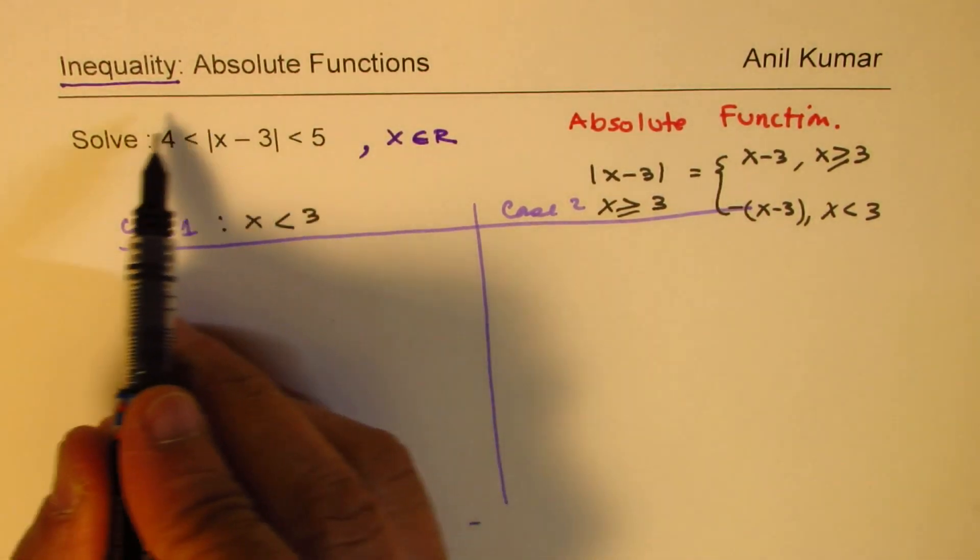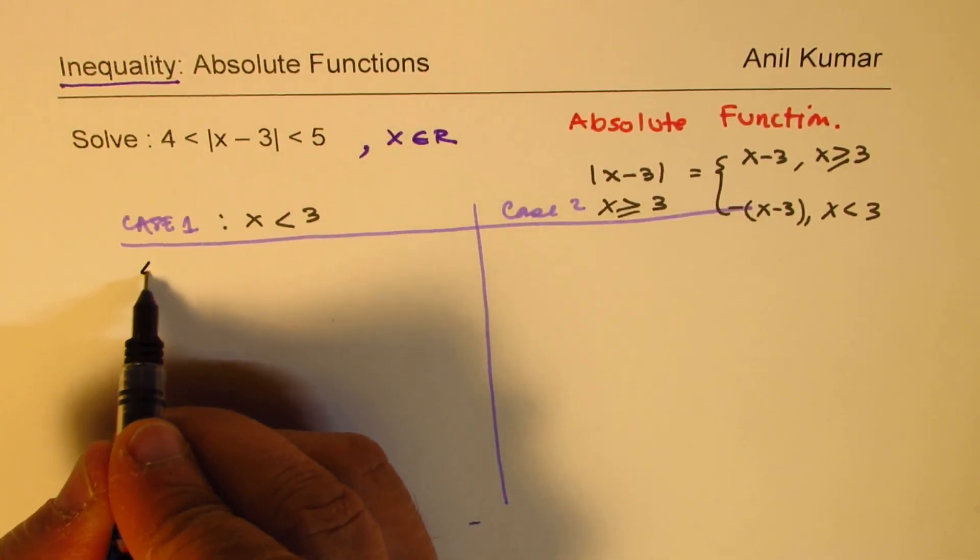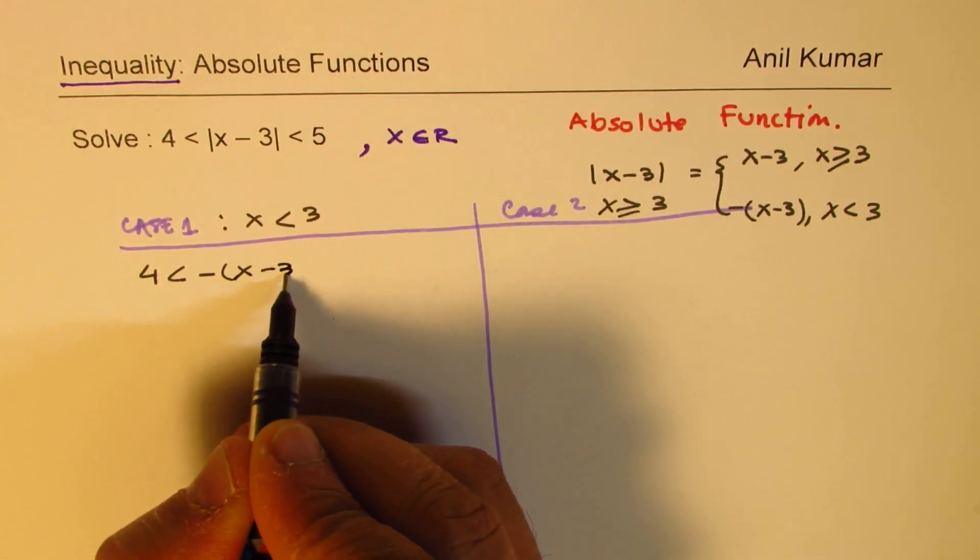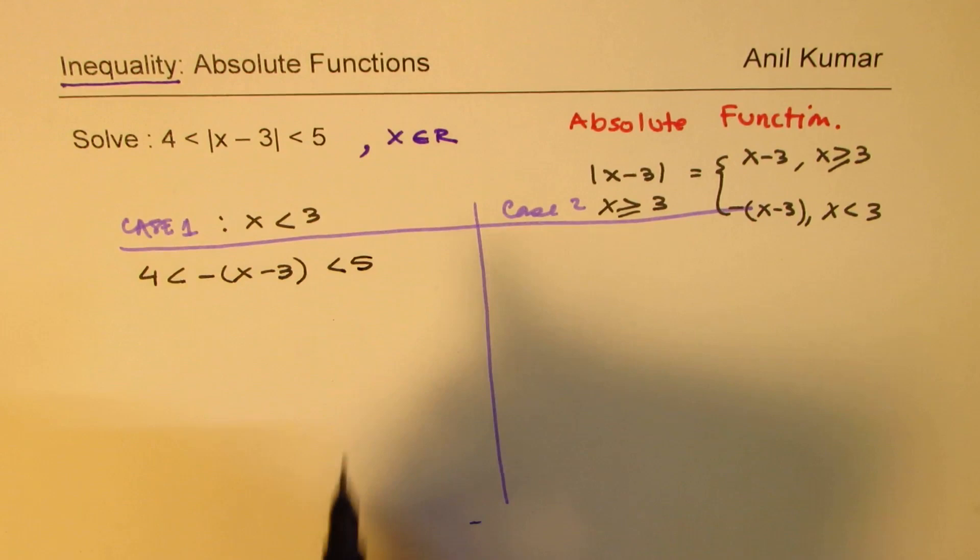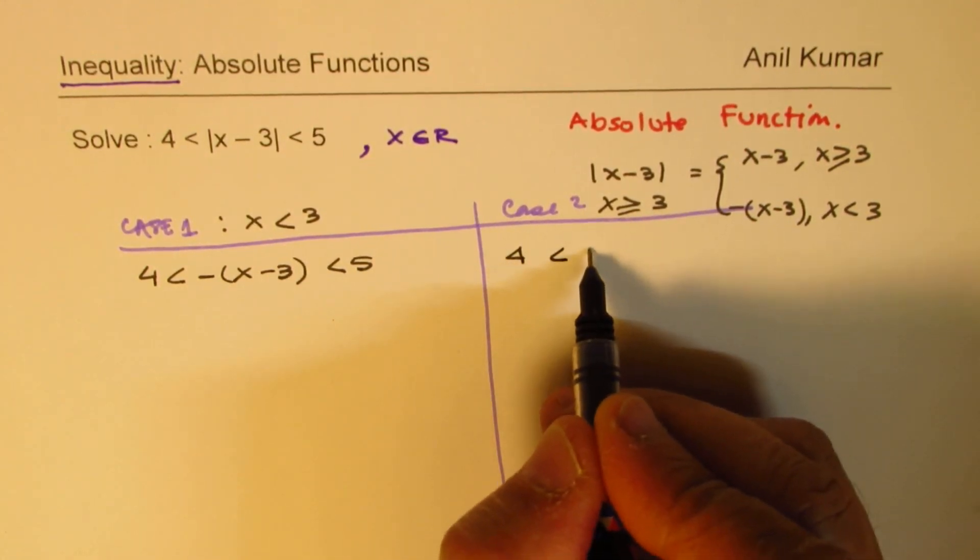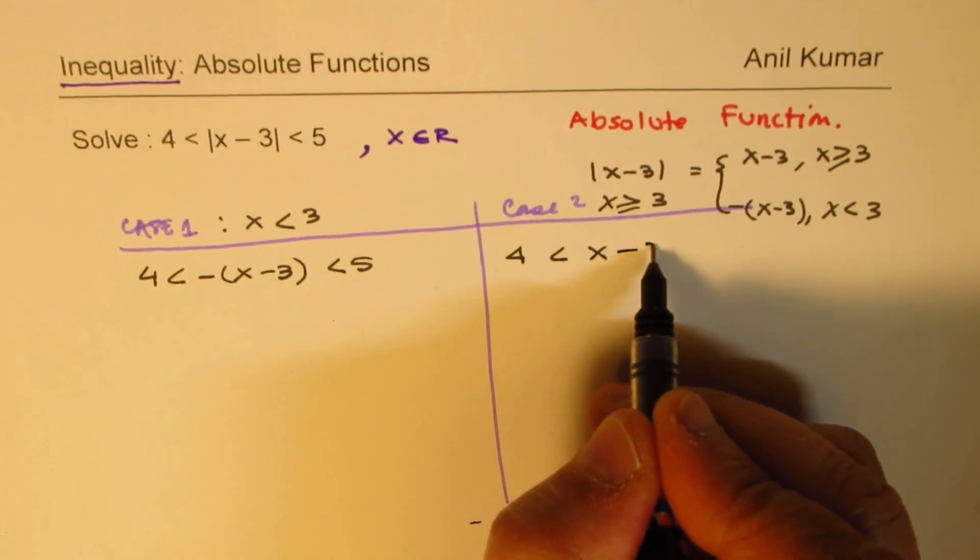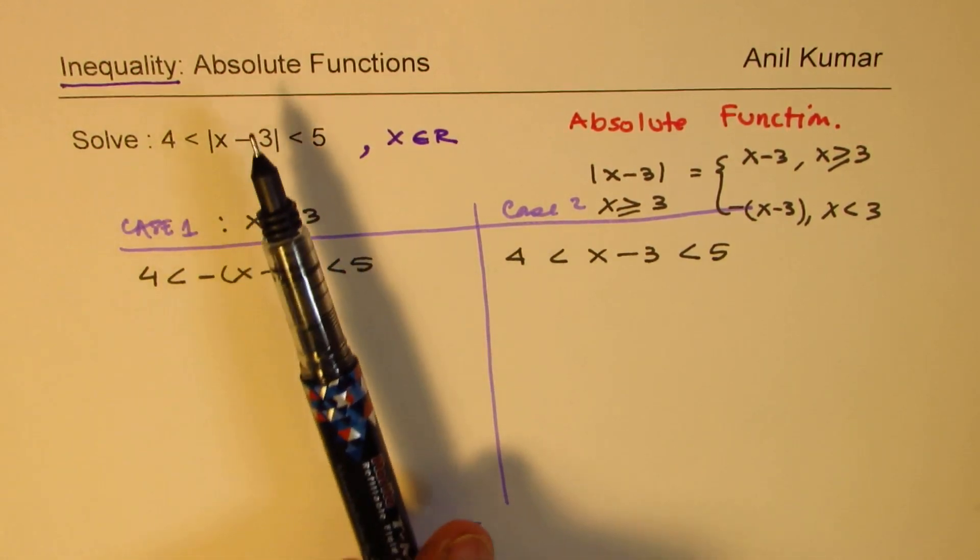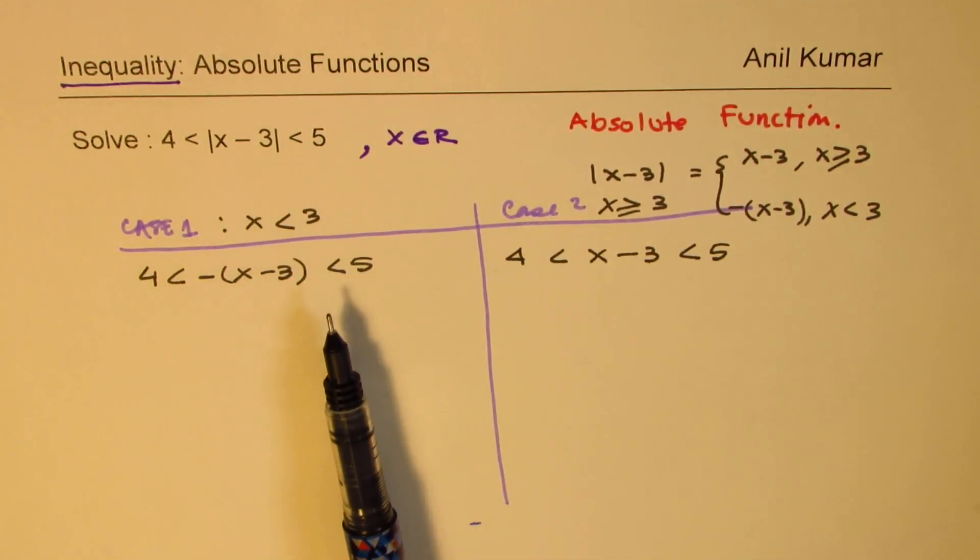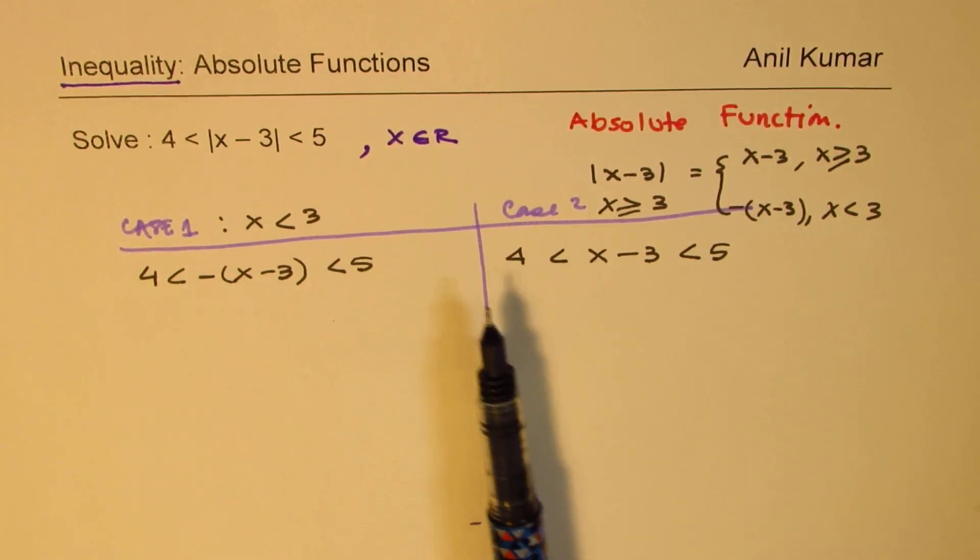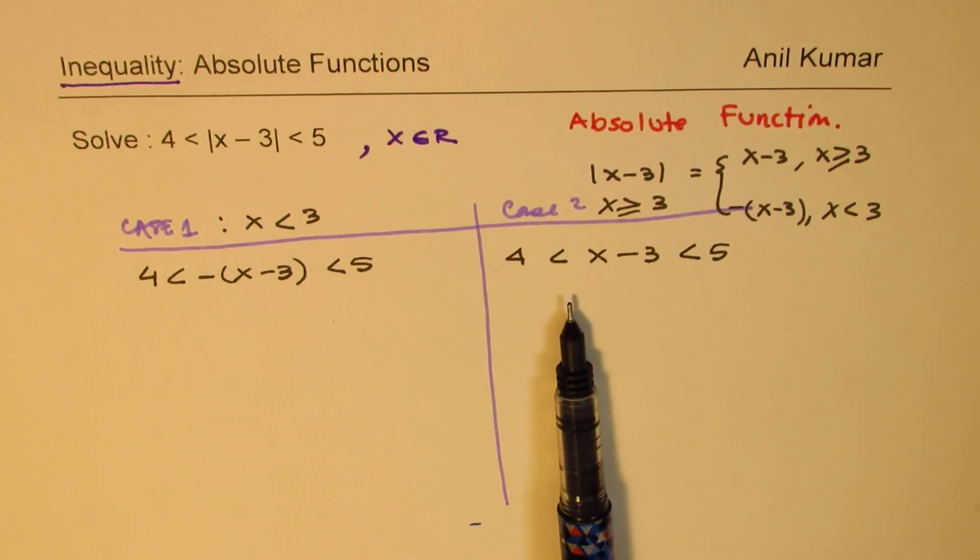So if x is less than 3, then the whole inequality can be written as 4 is less than minus of x minus 3, less than 5. And if x is greater than 3, then the inequality will be written as 4 is less than x minus 3, which is less than 5. So whenever you have absolute inequality, you have to always split it into two parts and then solve.